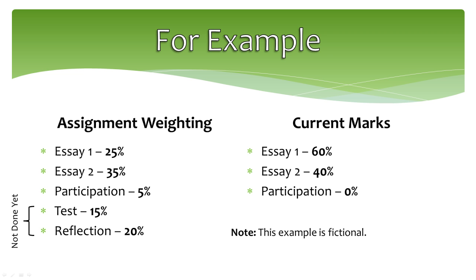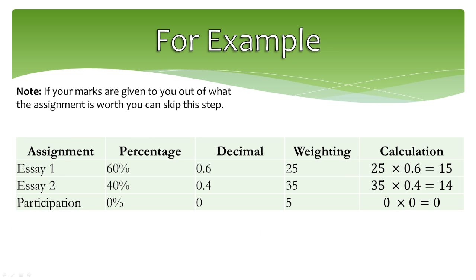Before using the formula, all percentages must be converted into a grade out of the associated assignment weighting, or the formula will not work. To find out how much of the final mark has been earned, first you need to convert the percentage into a decimal by dividing by 100. Then, take the weight of the assignment and multiply it by the decimal from step 1.